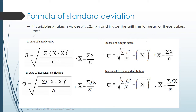In the case of frequency distribution, the standard deviation equals the square root of sigma(f times x squared) divided by capital N minus x-bar squared. Remember, in this formula it is clearly sigma f times x squared. That part I will also explain at the time of the calculation of the standard deviation.